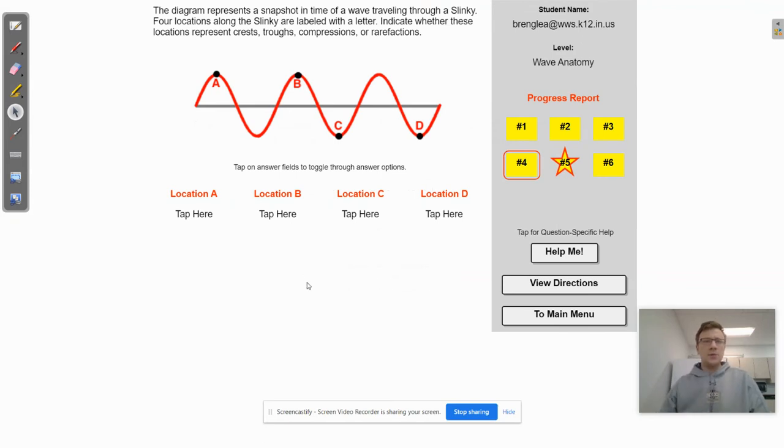Okay, this one says we've got a snapshot in time of a wave traveling through a slinky. Four locations along the slinky are labeled with a letter. Indicate whether these are crests, troughs, compressions, or rarefactions. So the crests are going to be the high points. So that's going to be locations A and B. So we'll go ahead and look for crests here for A and B. And then the troughs are low points. And so that's going to be C and D. Now, the compressions and rarefactions are going to be found in a different type of wave, right? This is a transverse wave. You're going to find the compressions and rarefactions in the longitudinal wave, which we, I'm sure, will get an example of.